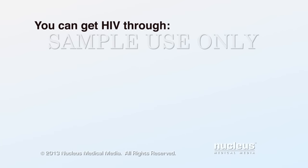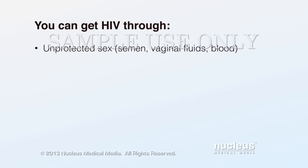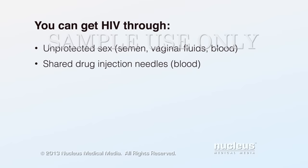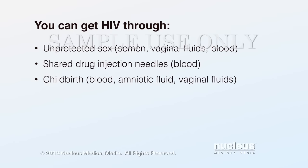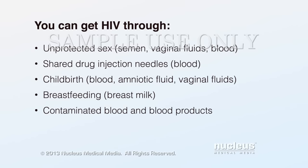HIV passes from person to person through infected body fluids. HIV can enter your body during unprotected sex, while sharing drug injection needles, during childbirth, while breastfeeding from your mother, or from contaminated blood or blood products.